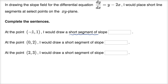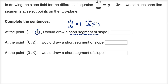When x is equal to negative one and y is equal to one, what is the derivative of y with respect to x? The derivative of y with respect to x is equal to y, which is one, minus two times x, where x is negative one. So that's one minus negative two, which is one plus two, giving us a slope of three. I would draw a short segment of slope three.